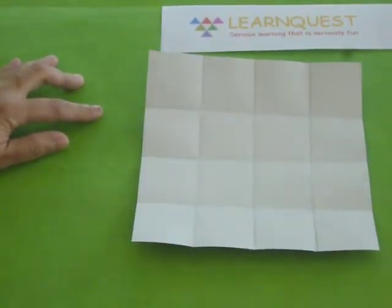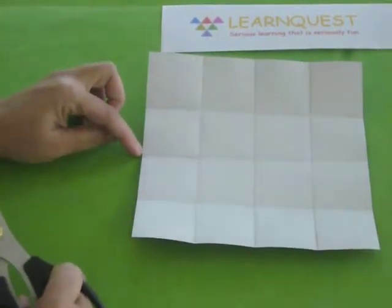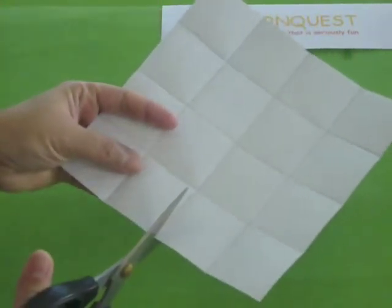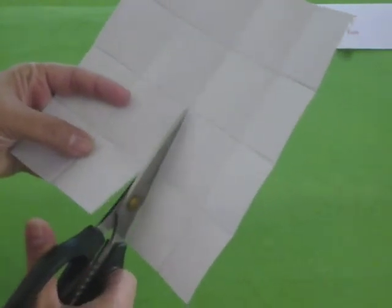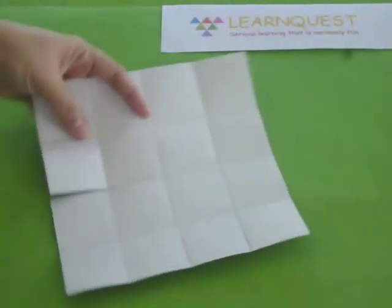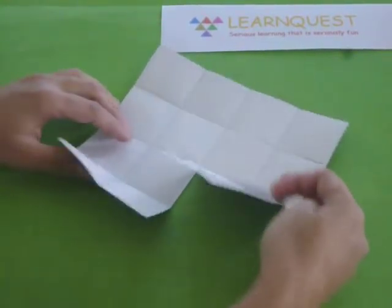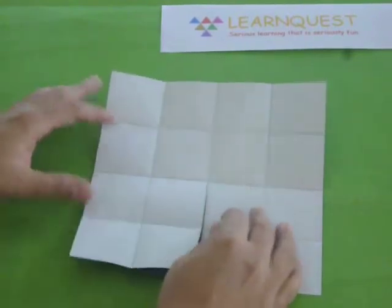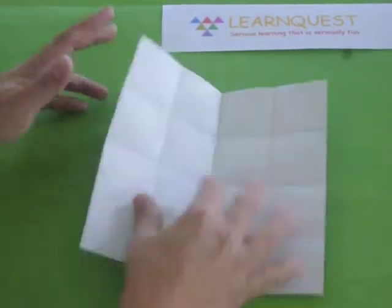To complete the puzzle, take a scissor and cut out from this end to this end. Carefully cut on the crease. There you go. Our puzzle is ready.